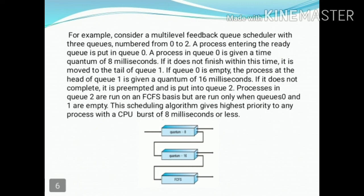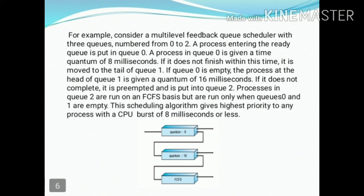This scheduling algorithm gives the highest priority to any process with a CPU burst time of 8 milliseconds or less. Processes with a burst time of 8 ms or less receive high priority in Q0. Processes requiring between 8 ms and 16 ms receive second priority in Q1. From this mechanism, processes can be executed efficiently.